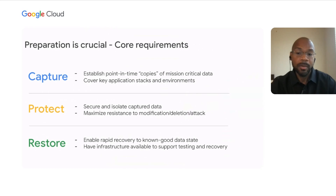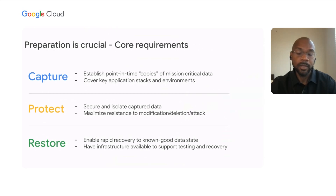The second core requirement is the ability to protect the data you've captured by securing it in a safe location with sufficient isolation from your production infrastructure. A good solution will also store and protect your data in a way that maximizes its resistance to unauthorized tampering. The third and final core requirement is the ability to quickly restore your business after an attack has occurred by recovering to a known good data state, which also involves having mechanisms to identify a good state to return to.